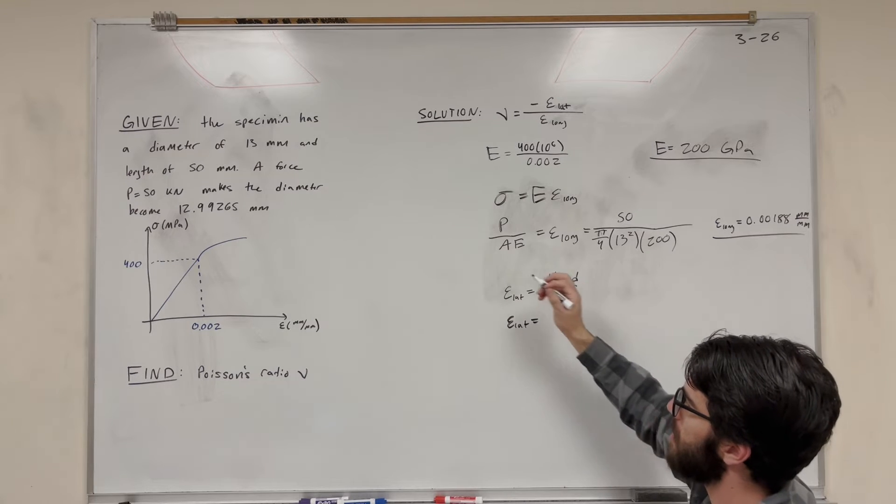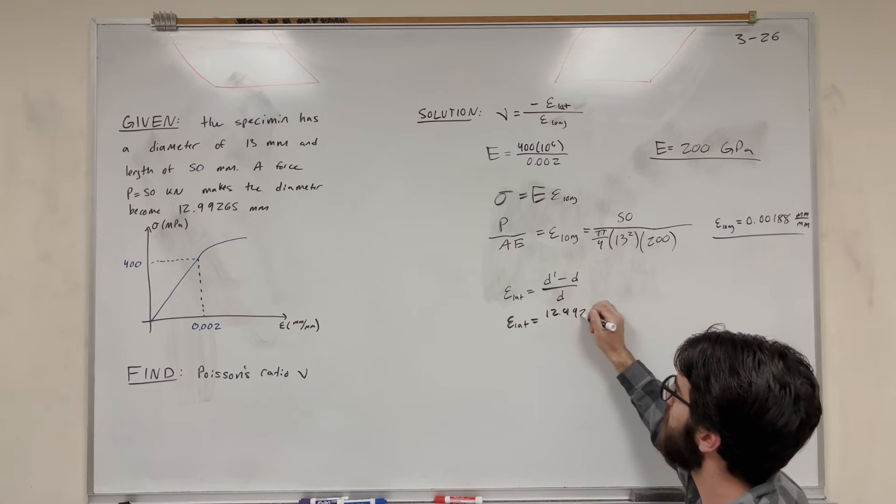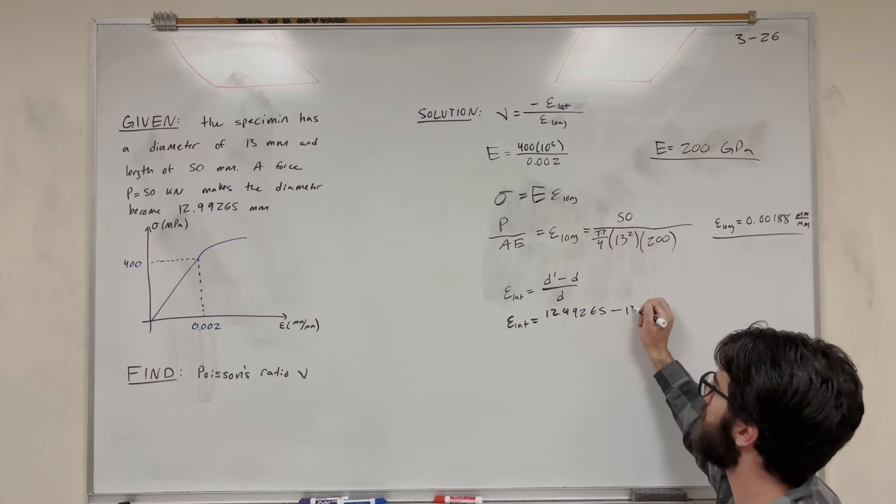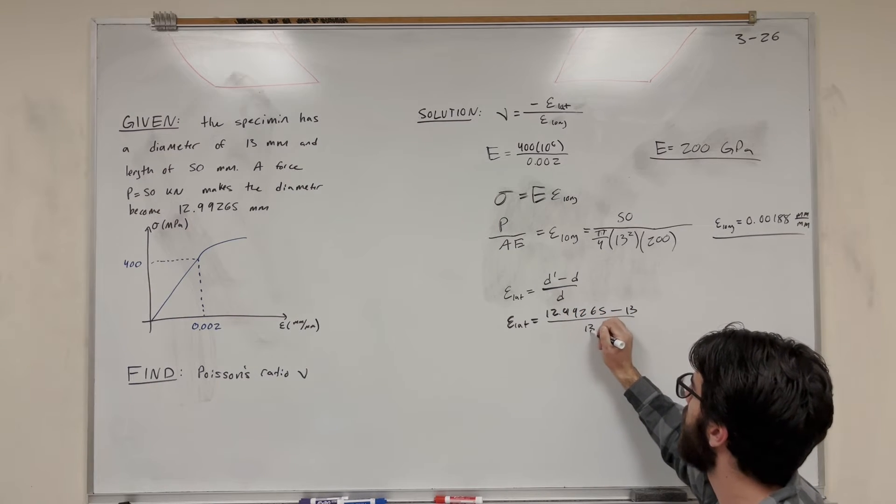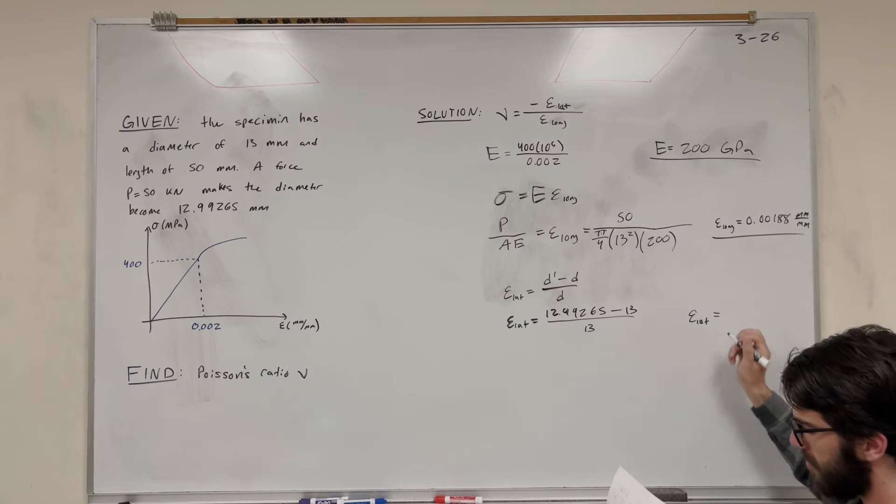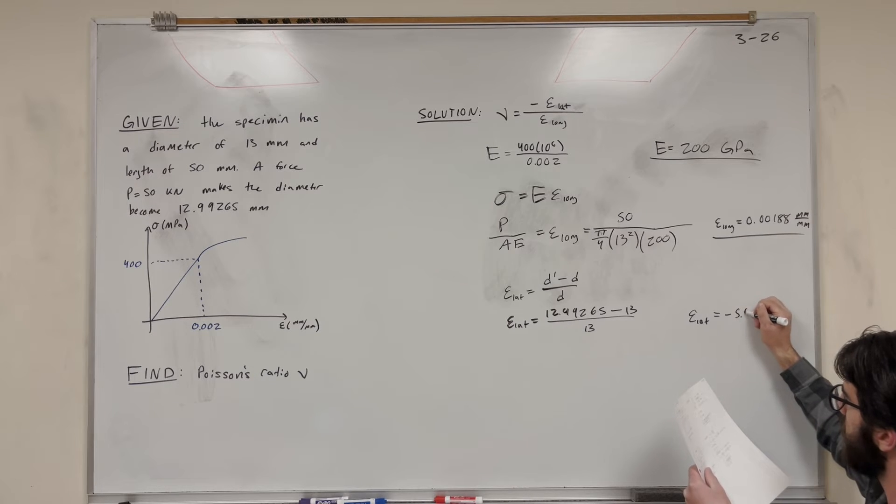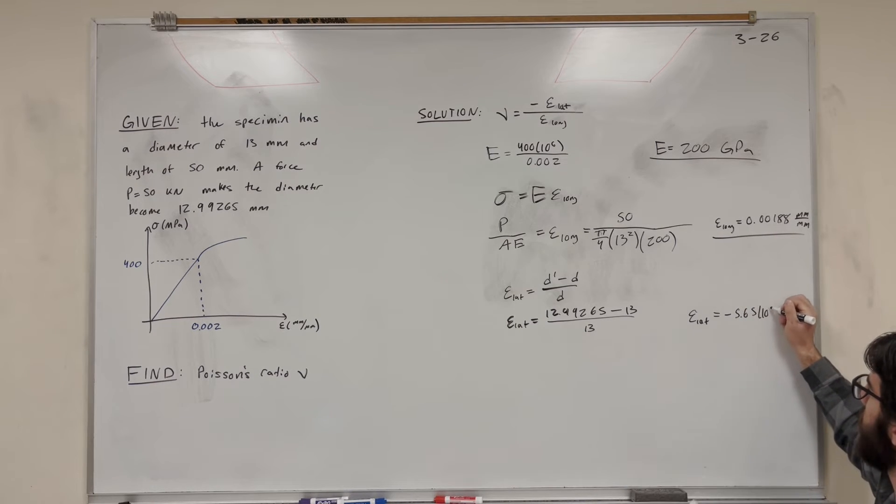D prime, this is the new diameter. So that's going to be 12.99265, minus 13, over 13. The lateral strain is equal to negative 5.65 times 10 to the negative fourth millimeters per millimeter.